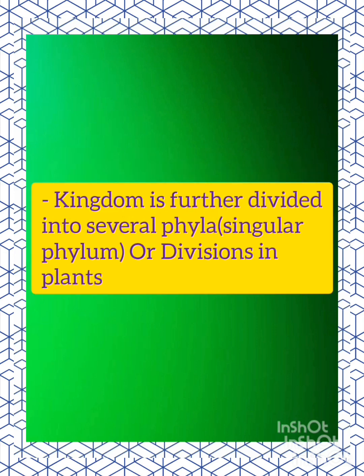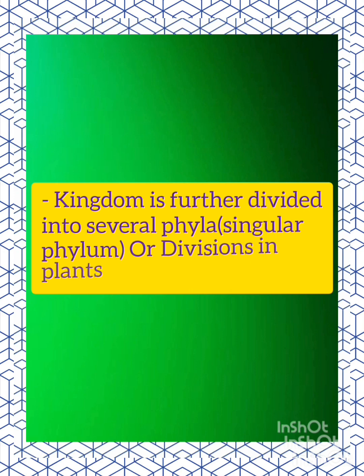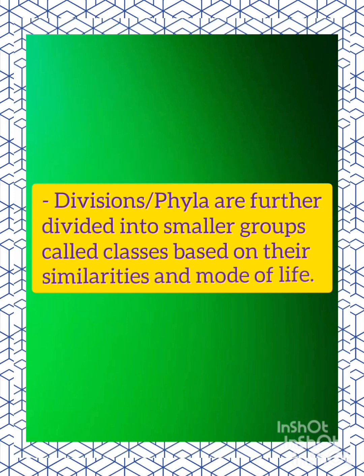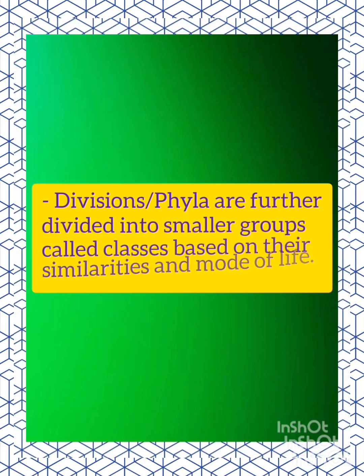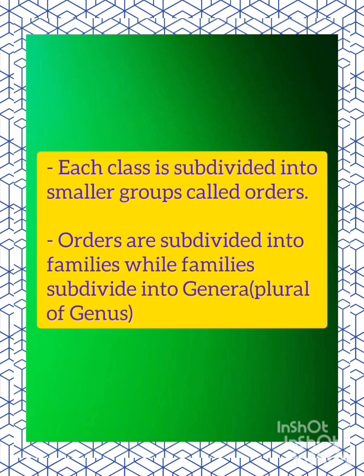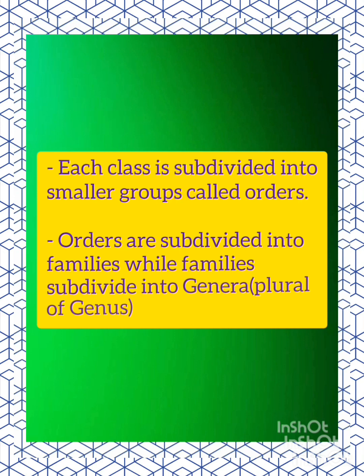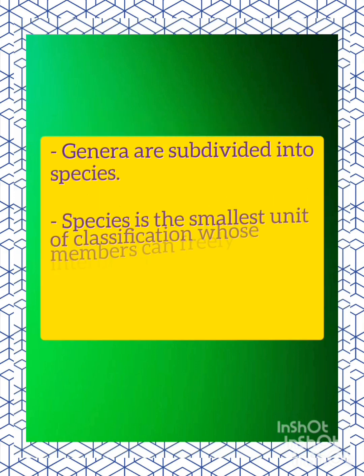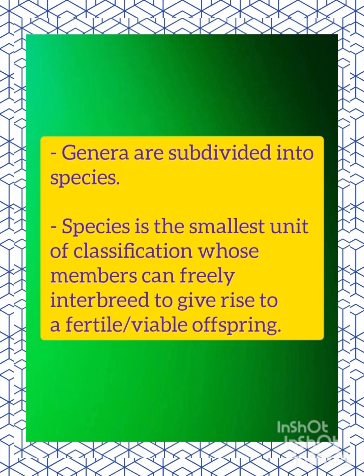Kingdom is further divided into several phyla, or division in plants. Phyla or divisions are further divided into smaller groups called classes based on their similarities and mode of life. Each class is subdivided into orders. Orders are subdivided into families, while families are subdivided into genera (plural of genus). Genera are subdivided into species, which is the smallest unit of classification whose members can freely interbreed to give rise to a fertile or viable offspring.